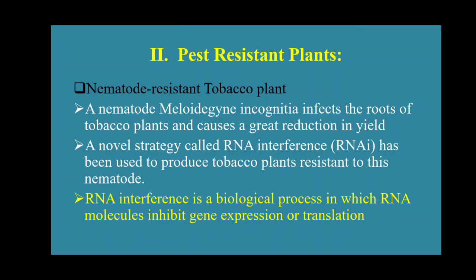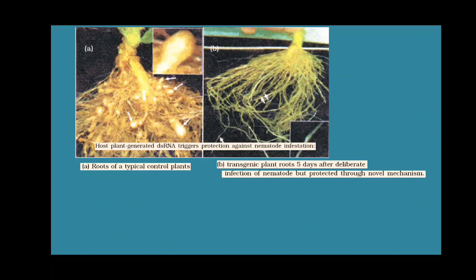The second example is pest resistance plants. Here we will discuss nematode-resistant tobacco plants. A nematode, Meloidogyne incognita, infects the roots of the tobacco plant and causes a great reduction in yield. This is the condition when the nematode enters the roots of the plant, compared to the condition where there is no nematode.